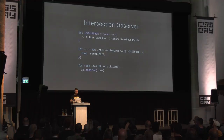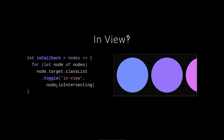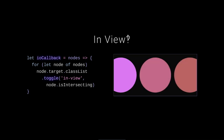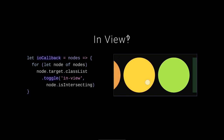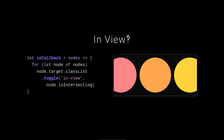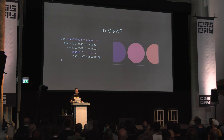In the IO callback, for each node coming in, toggle a class called 'in-view' based on whether the node is intersecting. One function, a tiny bit of code, and you get a really cool effect. When creating the IntersectionObserver you can also pass options — like a threshold for how much intersection is required before the callback fires. But that was a cool basic example.